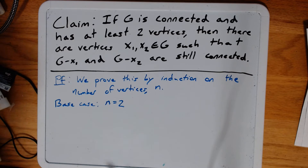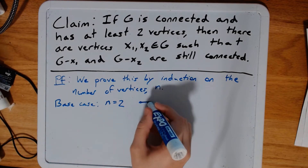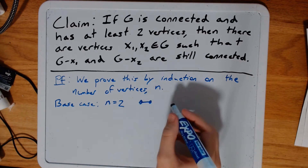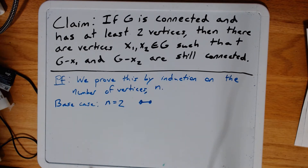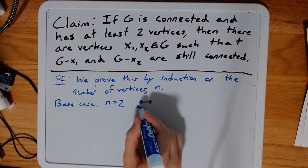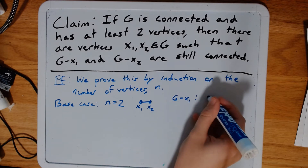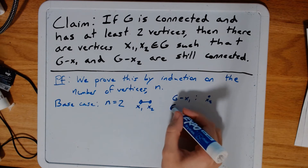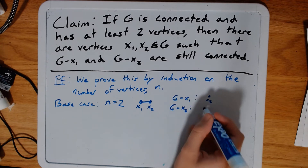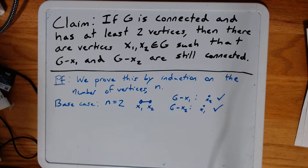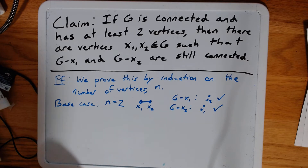There's only one connected graph with two vertices, and it looks like this. Indeed, if I remove either vertex, I still get a connected graph. So let's say this is x1 and this is x2. G minus x1 looks like just x2 on its own; G minus x2 looks like just x1 on its own. And those are both connected. So we've proven the claim in the base case.